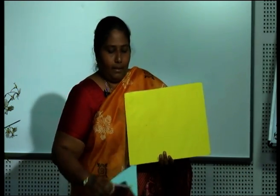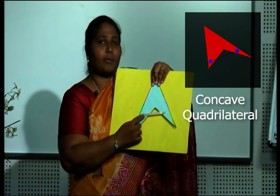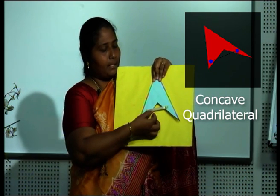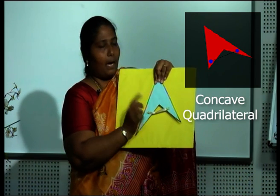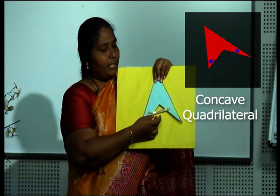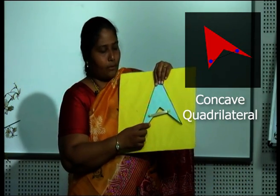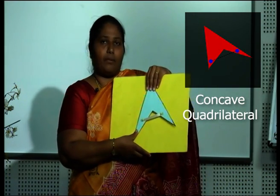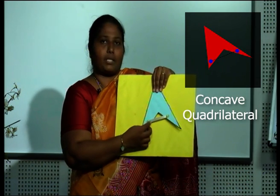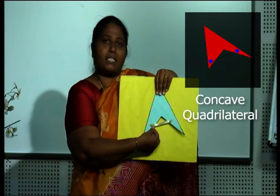And this is a concave quadrilateral. These two are interior points of the quadrilateral, being connected with many other points forming a line segment. However, these two interior points are being joined with the help of a few points lying outside — in the exterior of the quadrilateral. So a concave quadrilateral is one in which two interior points are connected wherein some points lie in the interior and some others lie in the exterior of the quadrilateral.